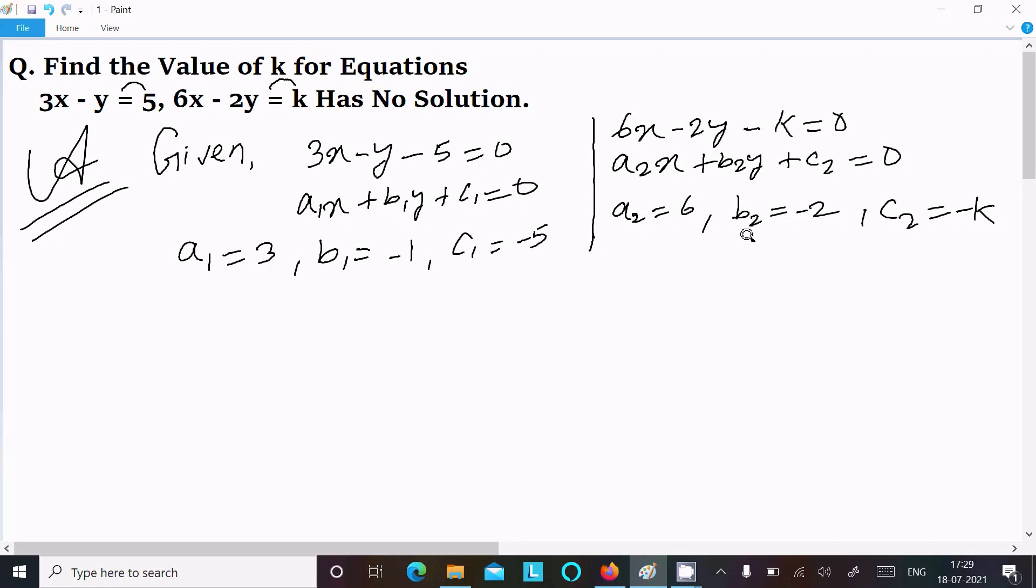For an equation to have no solution, you need to use the condition where a1 divided by a2 equals b1 divided by b2, which is not equal to c1 divided by c2. So if you get terms with no solution, you should use this condition.